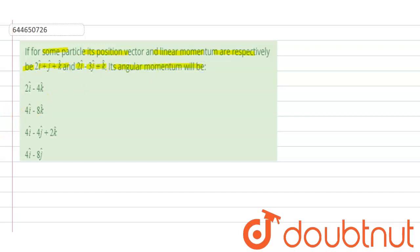This question is based on the chapter rotation dynamics. Here r vector is given, that is position vector is given 2i cap plus j cap plus k cap, and momentum vector p is given 2i cap minus 3j cap plus k cap.